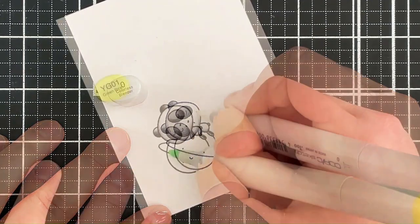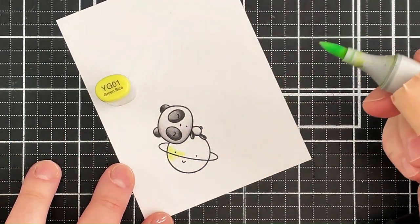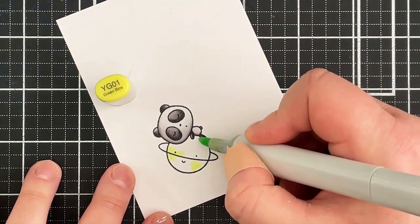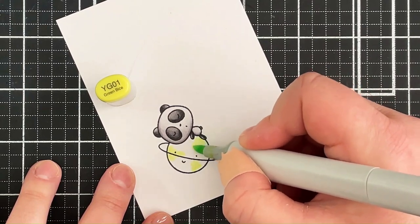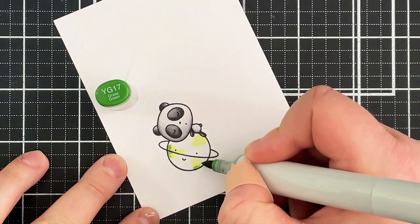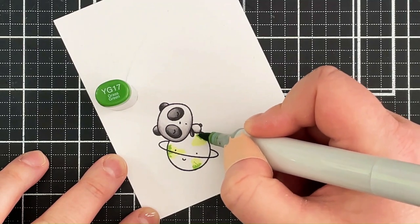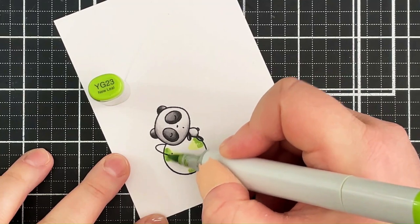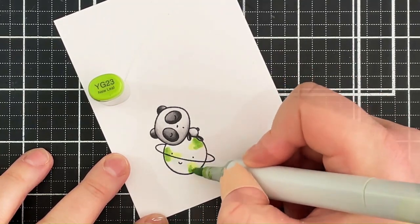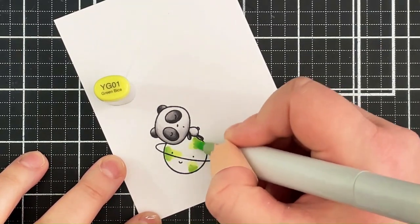And then for the planet that he is laying on I am coloring it as if it was the planet earth. Obviously planet earth doesn't have a ring around it, but because my sentiment says welcome to the world little one I kind of wanted it to look like it was the earth. So I'm going in to start with YG01 and I was just mapping out where I wanted the kind of land portions of this planet to be. I then went in with YG17 which was my darkest shade, I'm then blending it out with the YG23 and then back again with the YG01.